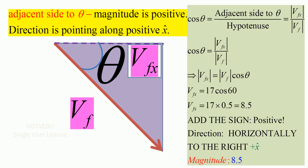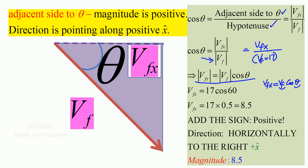Let us stick with magnitudes for the time being. Cosine theta is the adjacent side to theta divided by the hypotenuse. Do we know the hypotenuse? Yes — the hypotenuse is Vf, the magnitude of the velocity vector, which is 17. We don't know Vfx, but we know Vf is 17. When you cross multiply, we get Vfx equals Vf cosine theta. We know Vf, we know theta, so: 17 times cosine 60 gives us 8.5. That is the magnitude.